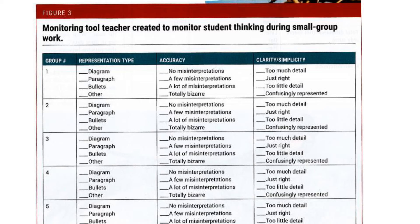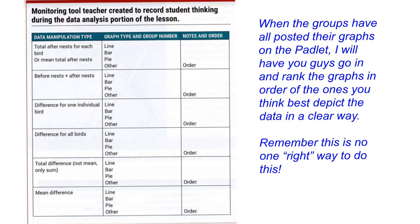We're going to use some peer evaluations. We'll look at what kind of graph you used, how accurate it was in depicting the data, and whether you used too much detail or not enough in your graphical representation. After everyone has posted their graphs, I'll have you use this form to order which groups' graphs you think depicted the data in the best way.